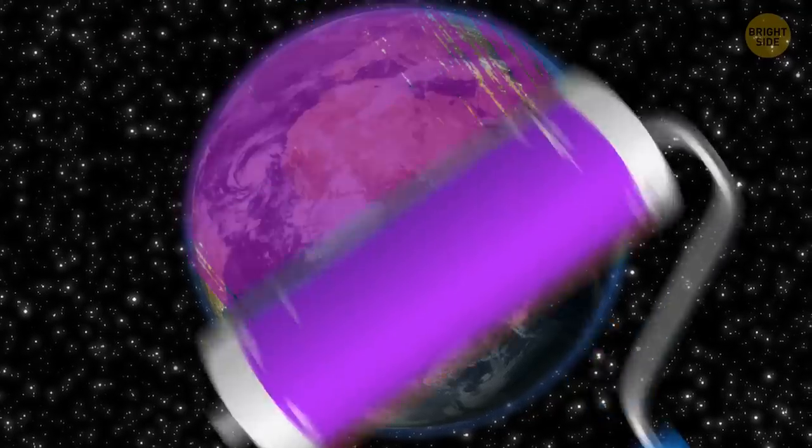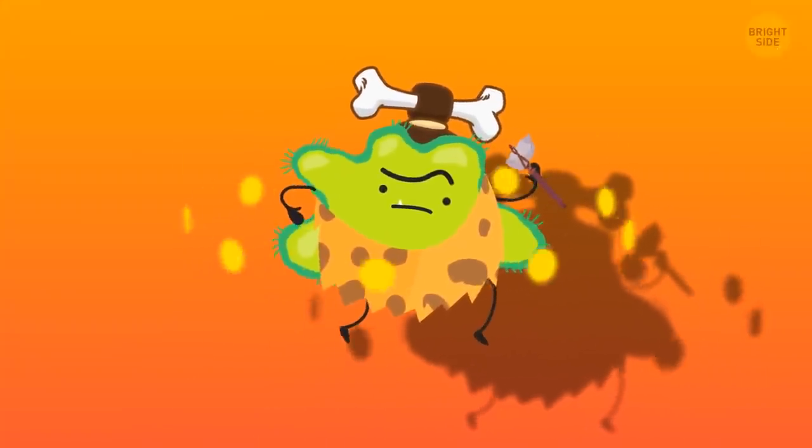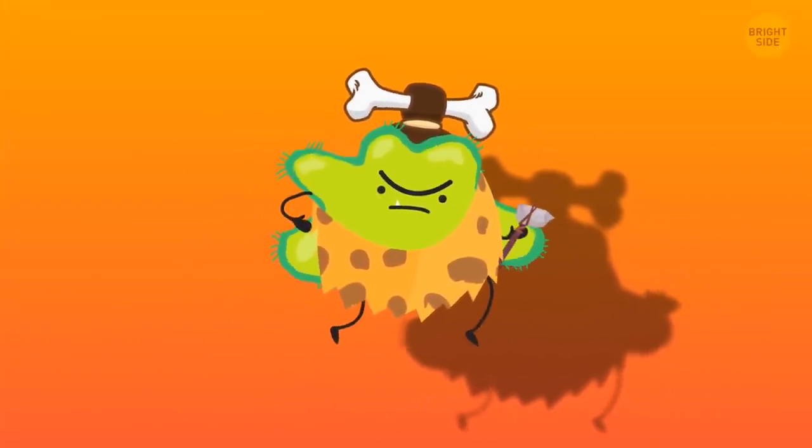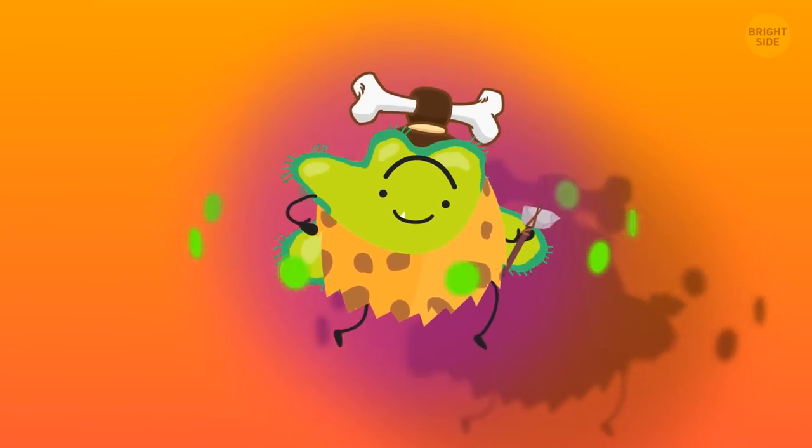Our planet used to be purple. One theory says ancient microbes didn't rely on chlorophyll to absorb the sun, but on different molecules. They absorbed green-white and then reflected back a nice purple color.